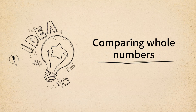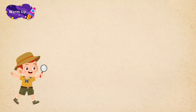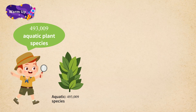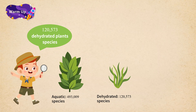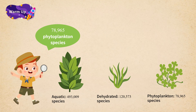Comparing Whole Numbers. Lumos, a foreign planet resident, came from planet Deratakaziva. The encyclopedia on planet Deratakaziva recorded that there exist 493,009 aquatic plant species, 120,573 dehydrated plant species, and 78,965 phytoplankton species.